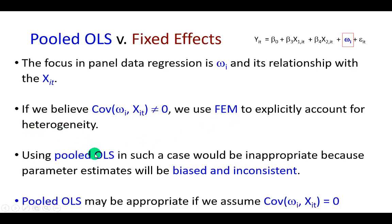Because using pooled OLS in such cases would result in parameter estimates that are biased and inconsistent. So you might guess that pooled OLS may be appropriate if we assume covariance to be zero between firm-specific error term and the regressors.